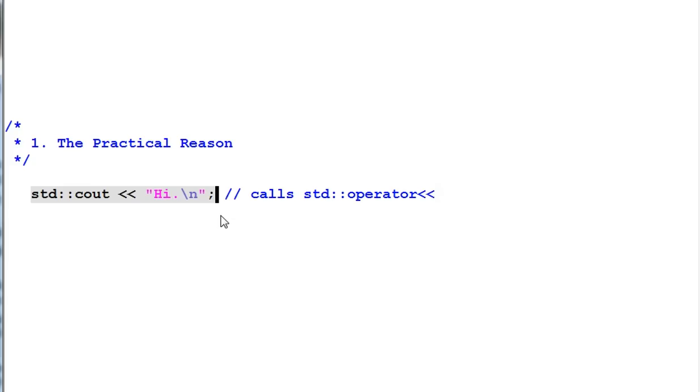Although in the code we only have one std qualifier, there are two things in the code that come from the std namespace. One is the cout. Another one is the left shifter.